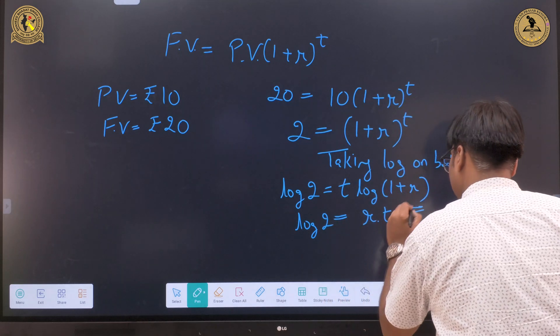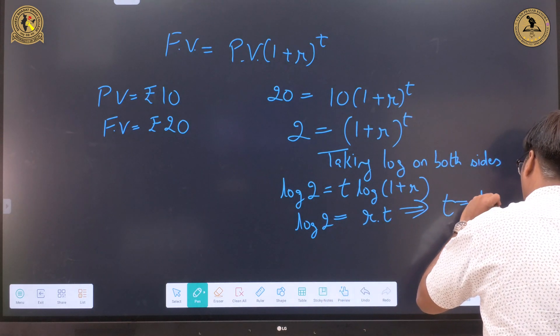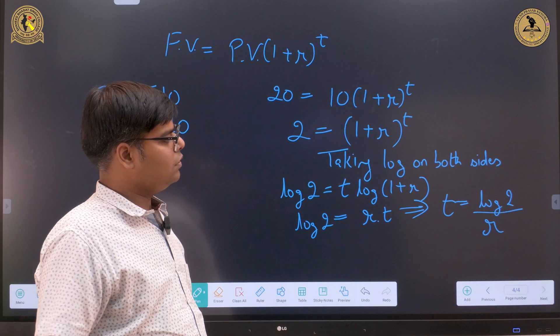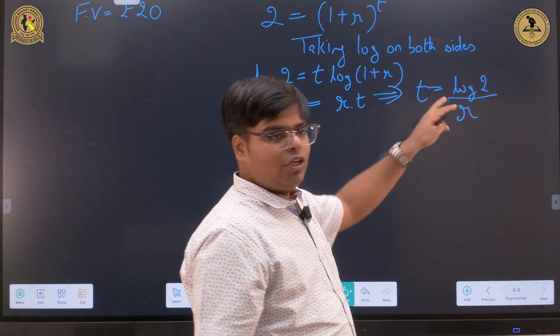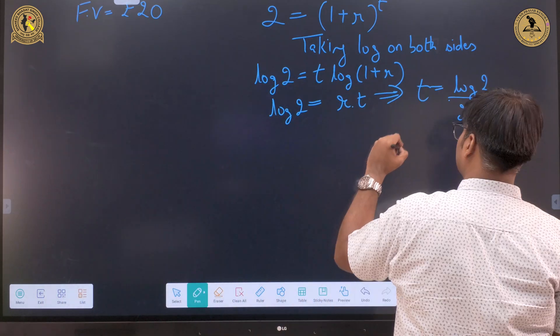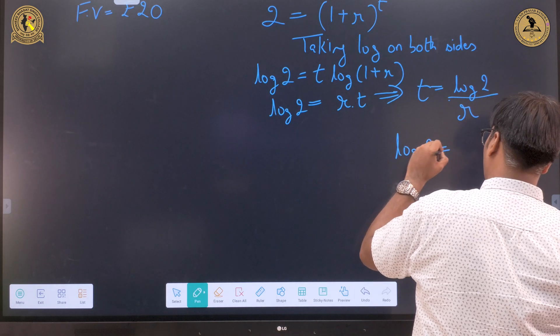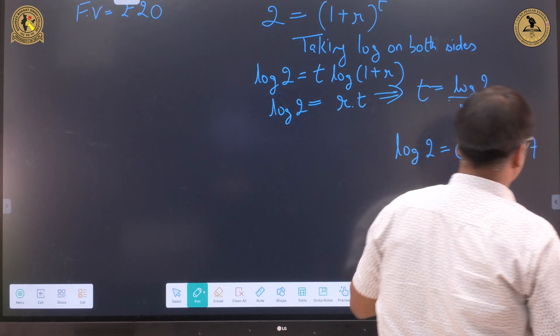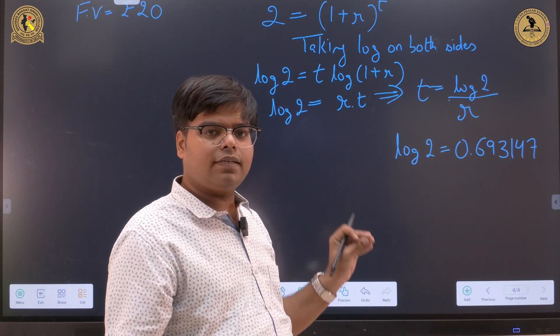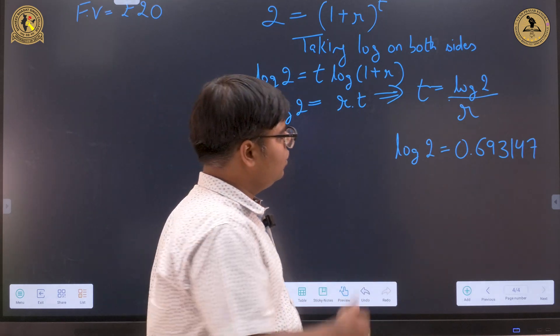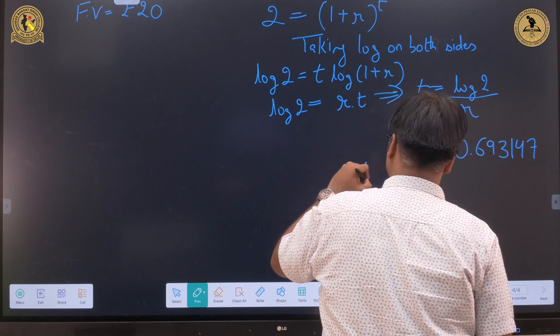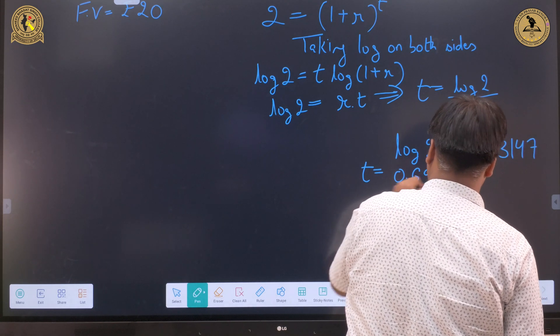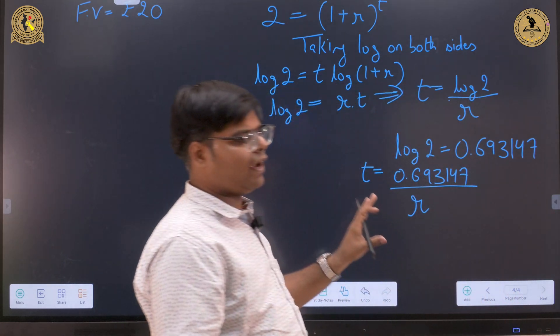Which again means time period equals log 2 divided by r. Now the natural logarithm value of log 2 is 0.693147. So putting it into the formula comes out to be, this is the final derivation.